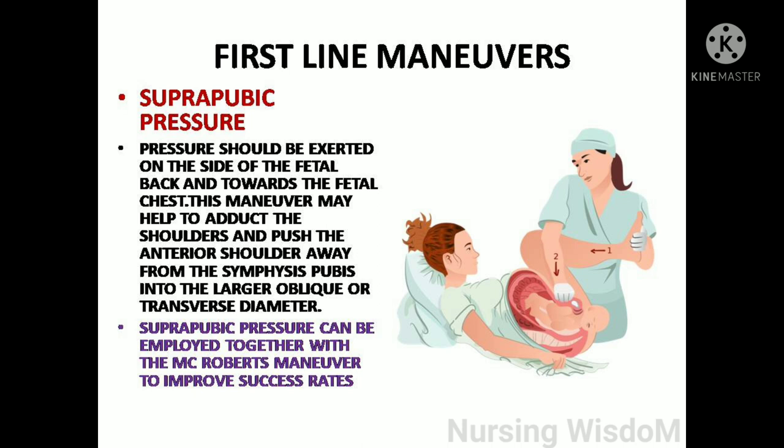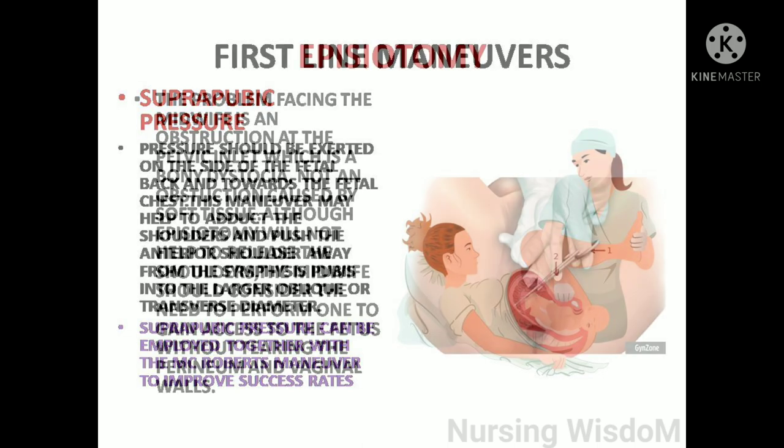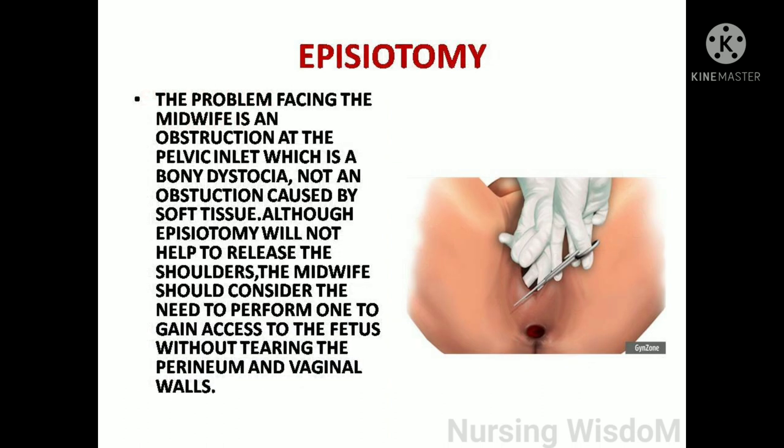If shoulder dystocia is diagnosed, immediately place the mother in the McRoberts position and start suprapubic pressure. These two maneuvers are performed together. In most cases, performing this first-line maneuver will succeed and deliver the baby. Only if this fails do we proceed to second-line maneuvers.